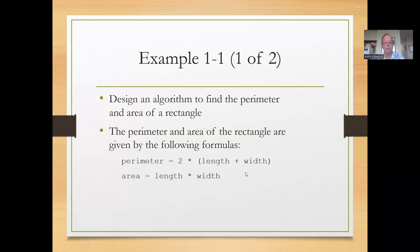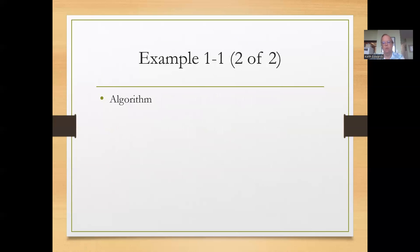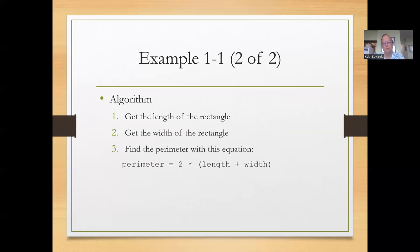So how can we do this? As an algorithm and not necessarily as a computer program, one, we can get the length of the rectangle. We also need to get its width. So that's step two. From there, we can find the perimeter using the equation that we had on the previous slide, two times the length plus the width. And then find the area with the equation, which is equal to length times width. We can also specify a final step of outputting the results or giving back the information. But this would definitely calculate it.